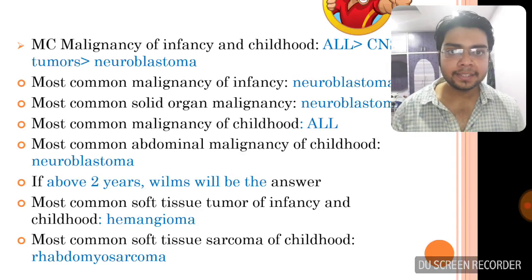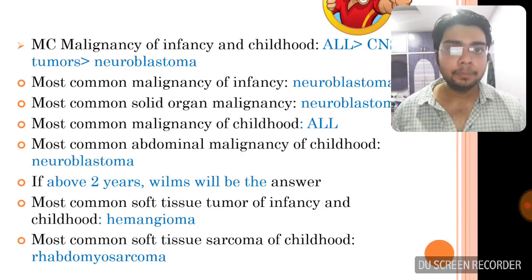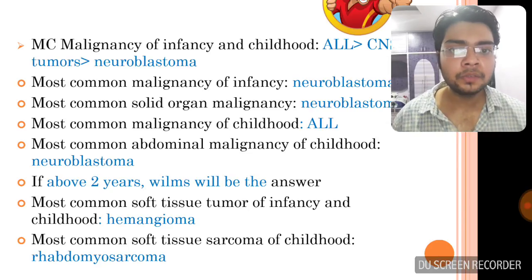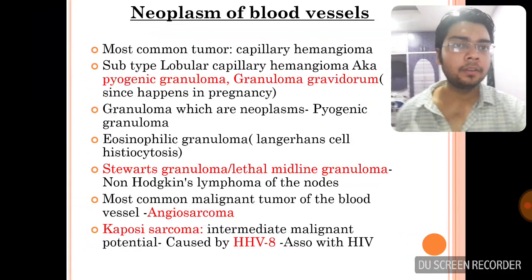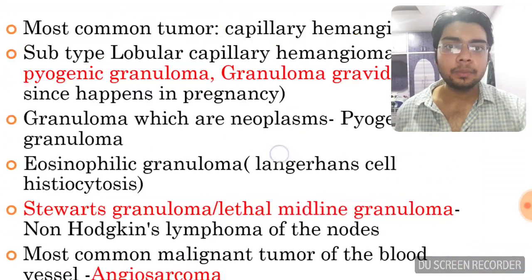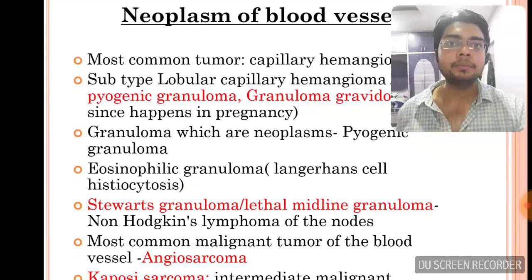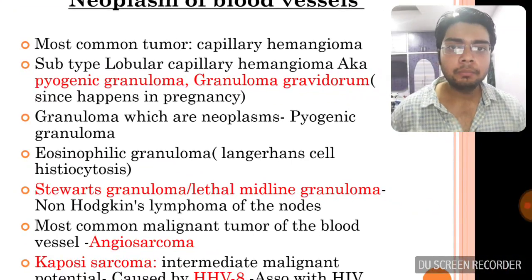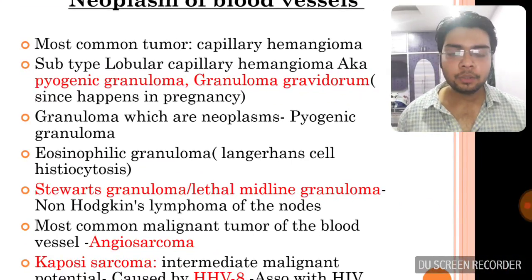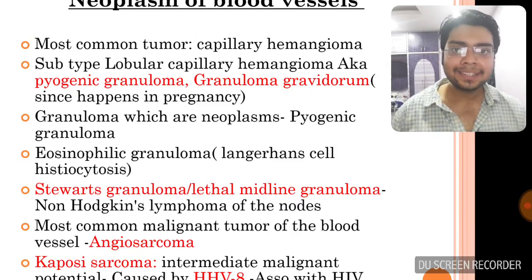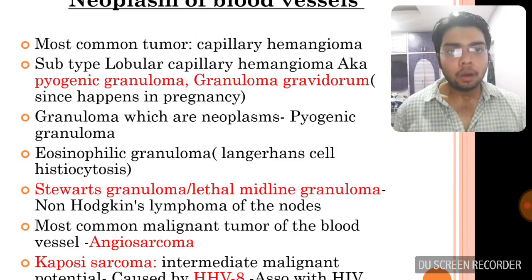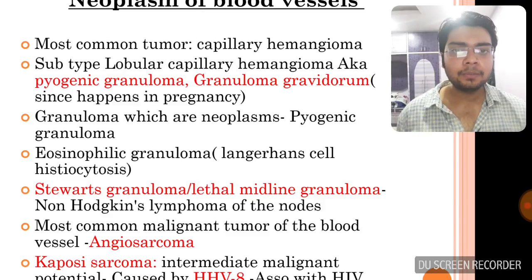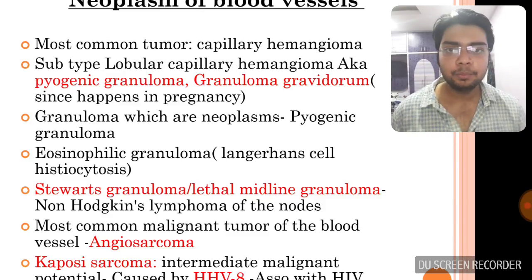The most common abdominal malignancy for children above 2 years is Wilms tumor. The most common soft tissue tumor of infancy and childhood is hemangioma. The most common soft tissue sarcoma of childhood is rhabdomyosarcoma. Regarding neoplasms of blood vessels: the most common tumor of blood vessels is capillary hemangioma, with the subtype lobular capillary hemangioma also called pyogenic granuloma or granuloma gravidarum, as it is seen in pregnancy.